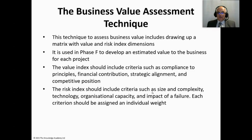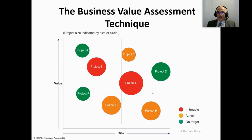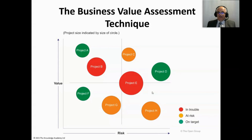The value index should include criteria such as compliance and principles, financial contribution, strategic alignment, and competitive position. The risk index should include criteria such as size, complexity, technology, organizational capacity, and impact of failure. Each criterion should be assigned an individual rate. There is an example in the TOGAF standard PDF, although it is very colourful. A RAG status is shown but seems out of place at this strategic planning level — it's far too early in the process to know whether a project is on target or at risk, and the standard doesn't explain why it's included.